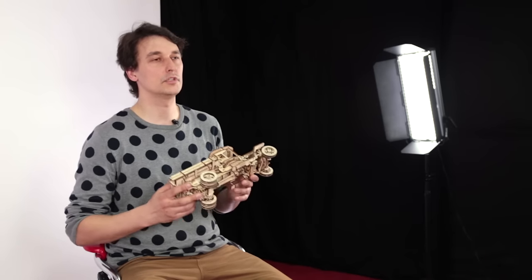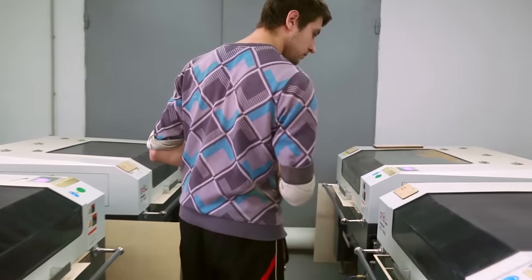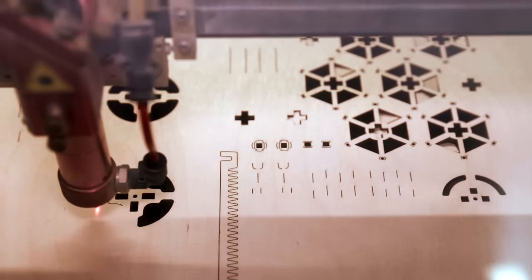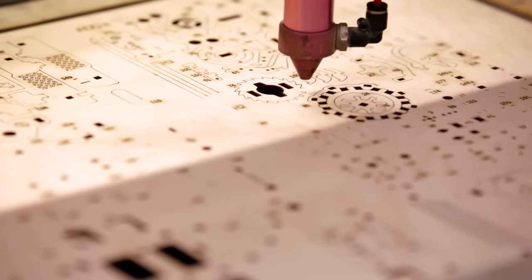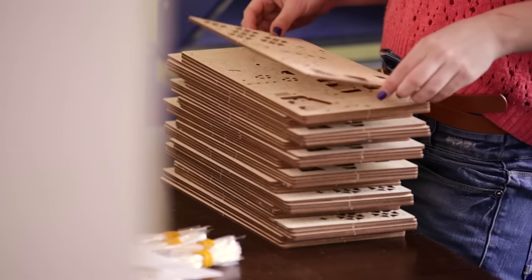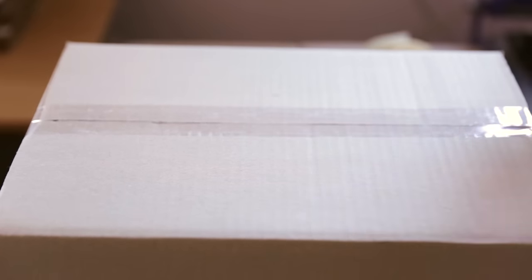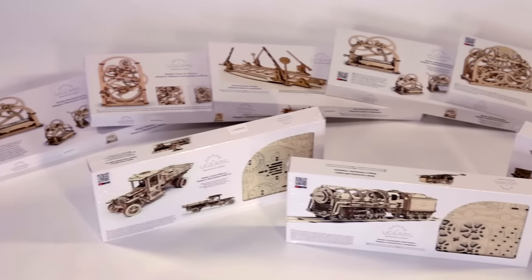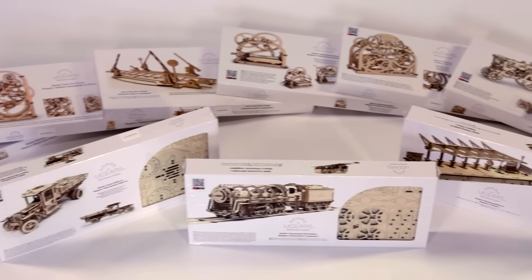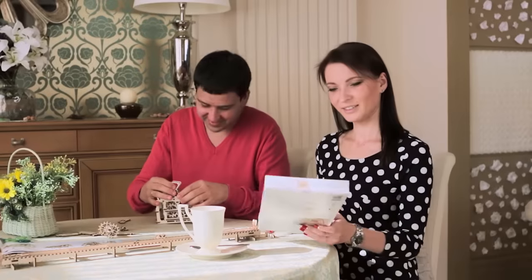We are delighted that U-Gears models are engaging for people of all ages. The quality of the parts is very high. A laser method is used for cutting items from a plywood board. Today, we have a team of more than 40 enthusiastic people. They invest their creativity and love in their craft, which you receive in each of the models.